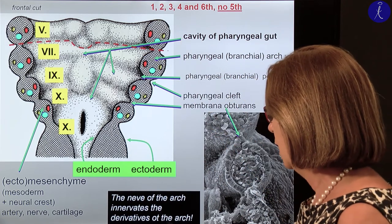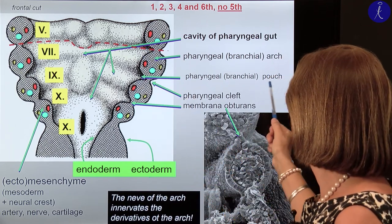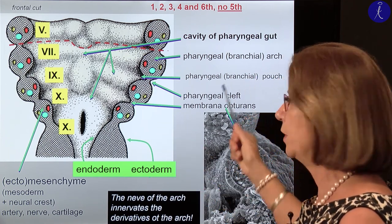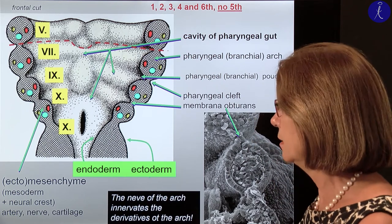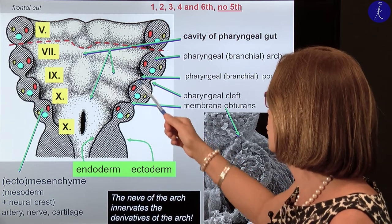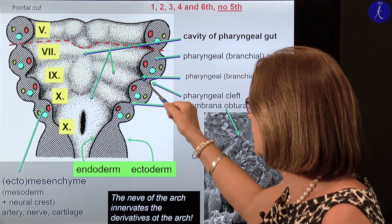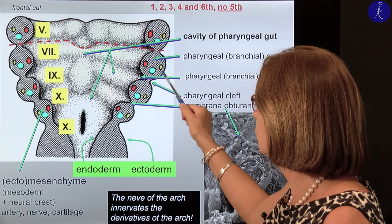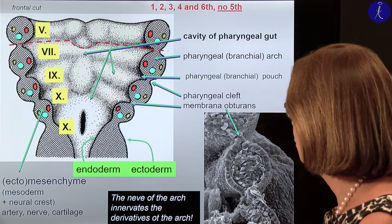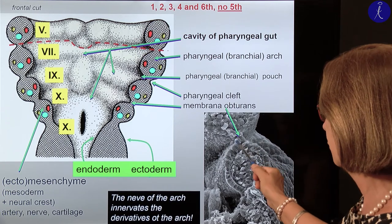Between the arches, these thinner territories on the inside are called pouches — pharyngeal pouches, or synonymously branchial pouches. 'Branchial' refers to the gill because this relates to the gill of the fish. On the external surface, these are the pharyngeal clefts. The inner surface is lined by endoderm, the outer surface by ectoderm. Where these two touch each other, that is the so-called membrana obturans. Here on a scanning electron microscopy picture you can see the two epithelial layers in contact with each other.